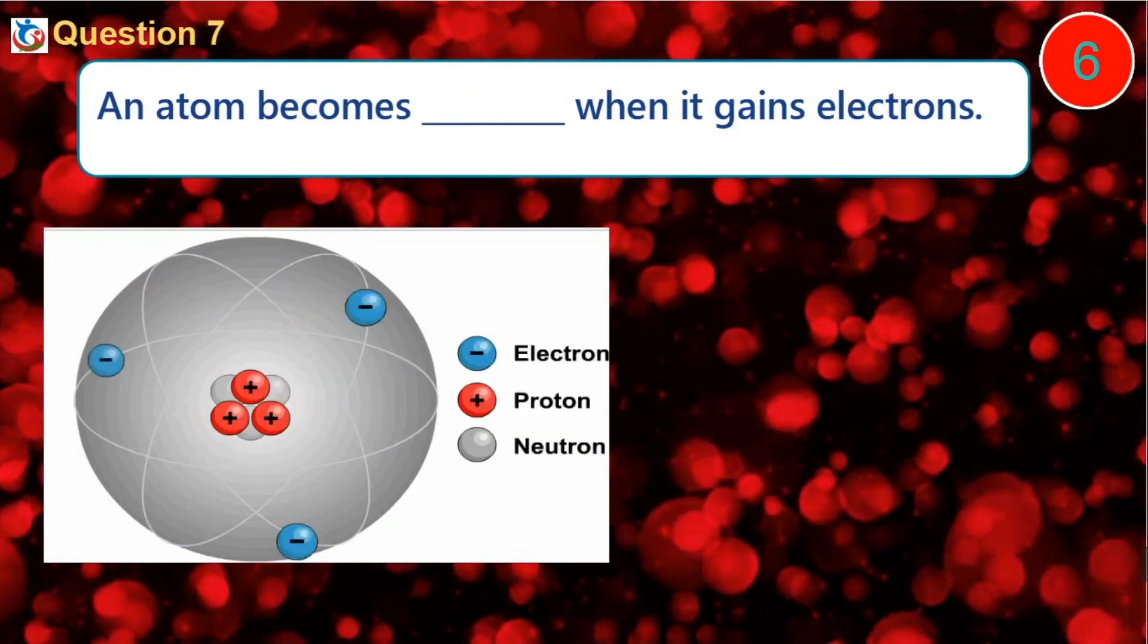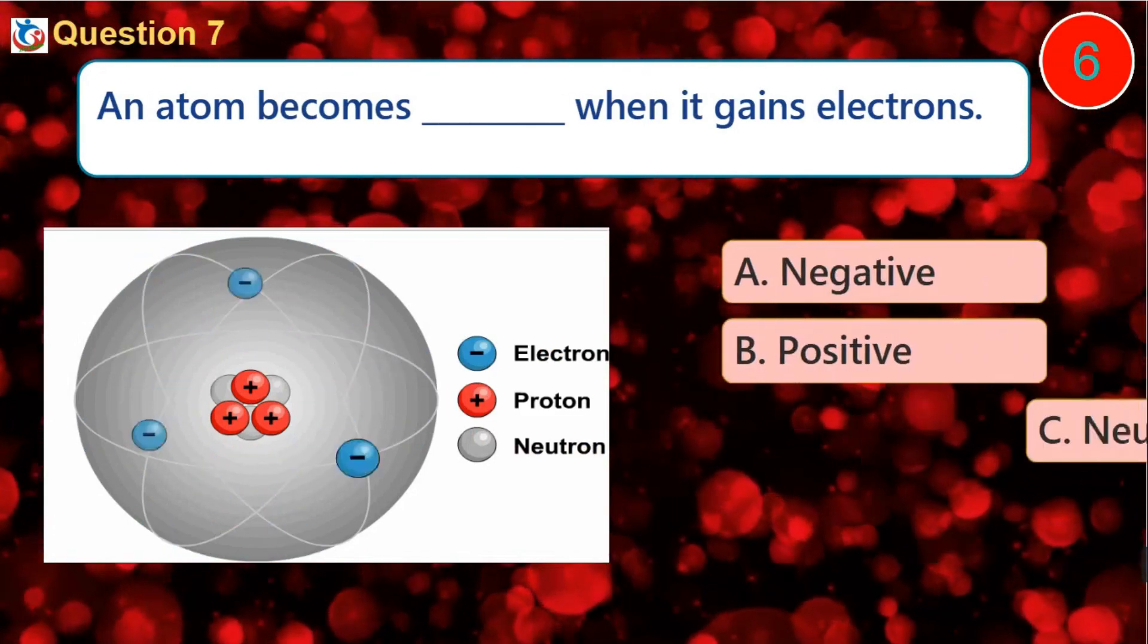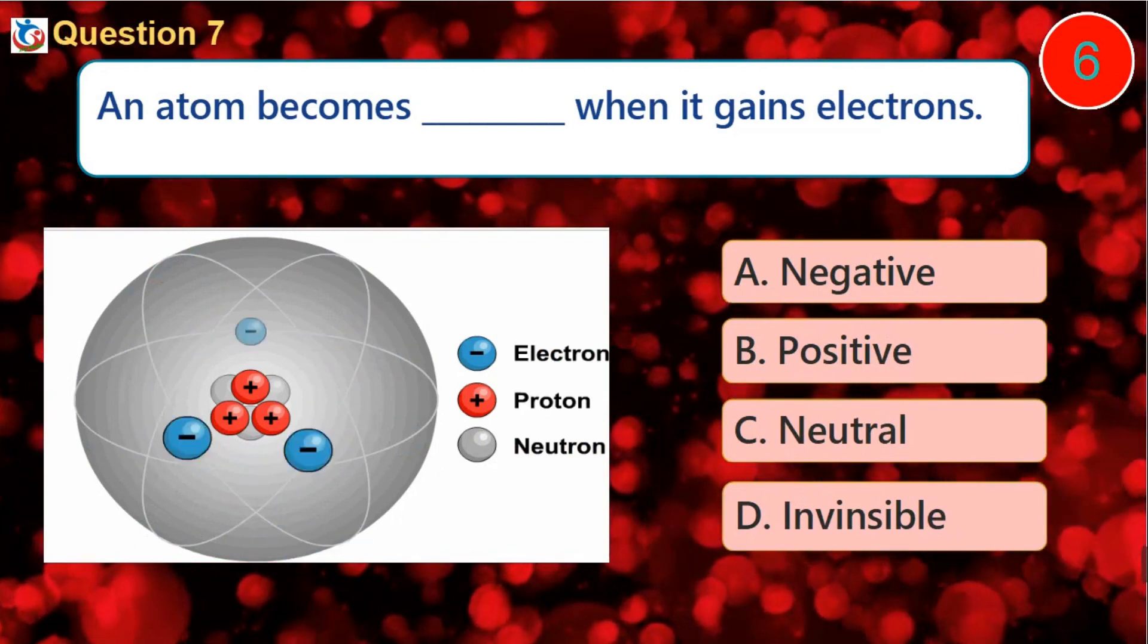Question 7. An atom becomes what when it gains electrons? A. Negative B. Positive C. Neutral D. Invisible